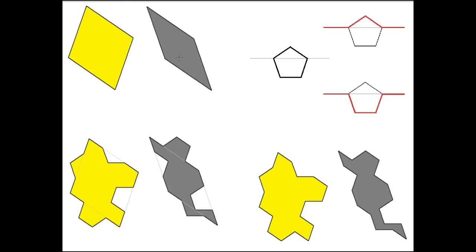Another two tiles that Penrose designed are these two rhombi, or rhombuses. Again, they can only be put together in certain ways. Another way, instead of using curvy lines, is to put teeth or bumps on them, so that only this lump can fit into that hole there, or this lump can fit into that hole. I've used shapes like a pentagon here — this is the top of a pentagon and this hole is like the bottom of a pentagon — because the rhombi angles are based on pentagonal angles.